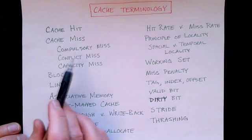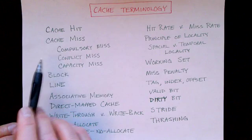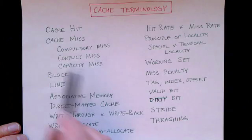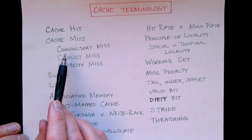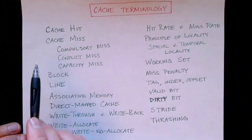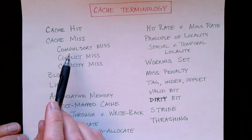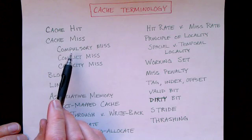There are several different reasons for a cache miss. It might be a compulsory miss — the cache might be cold. If the cache hasn't been warmed up yet, then the working set is not in the cache, so there is going to be a miss for sure.